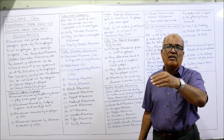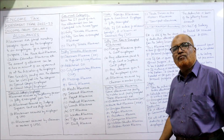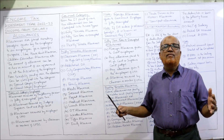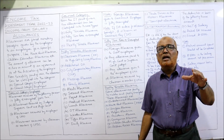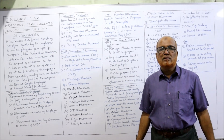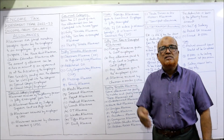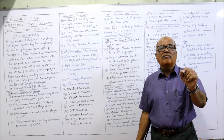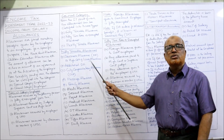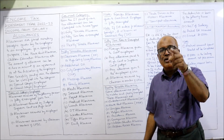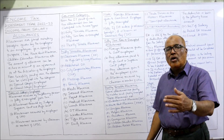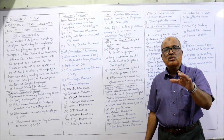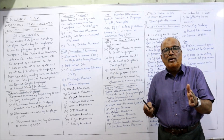Fully taxable allowances: when these appear in a problem, you should immediately say the allowance is fully taxable. First example — dearness allowance (DA) or high cost of living allowance. Due to inflation, employees on fixed salaries are badly affected as prices rise but salary remains constant, so the employer gives DA. When DA appears in a problem, it is fully taxable. Additional DA beyond normal DA is also fully taxable.